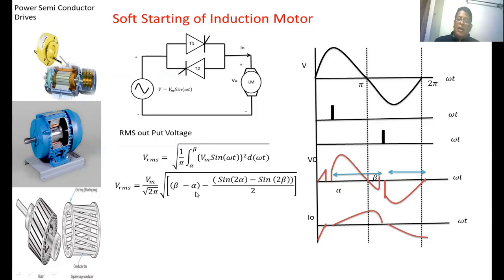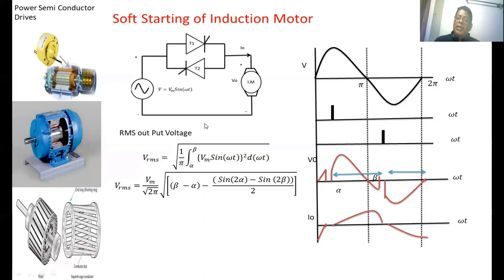The minimum firing angle is alpha equal to the load angle, and you can vary the firing angle alpha up to pi. Now, what is meant by soft starting? At the time of starting, the induction motor will take a large amount of current. By means of anti-parallel SCRs we are going to start the induction motor. To reduce the starting current, we apply a small voltage to the induction motor by maintaining the firing angle of the two anti-parallel SCRs near to 180 degrees. Very less voltage is applied so the motor starts slowly. As the speed of the induction motor increases, we decrease the firing angle down to alpha equal to phi, increasing the voltage until the rated voltage is applied. This type of starting is called soft starting of an induction motor.